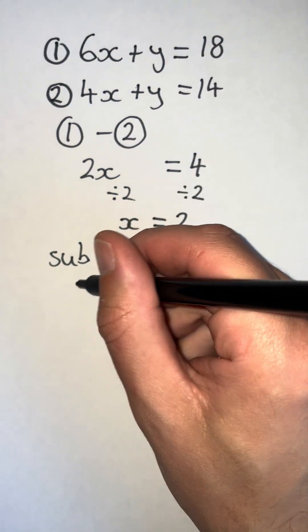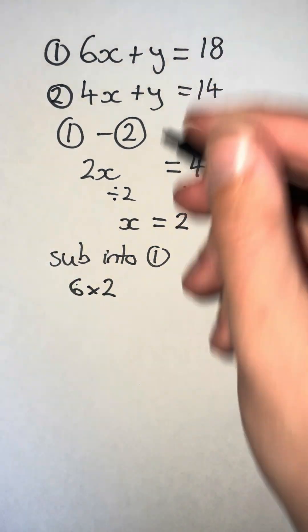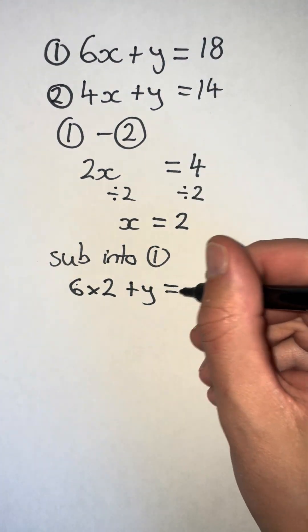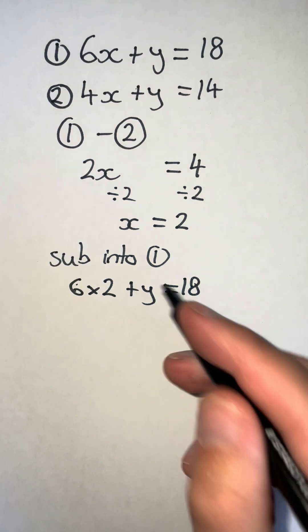That will be 6 times 2 plus y equals 18. 6 times 2 is 12.